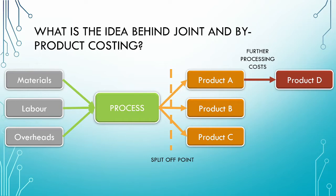These further processing costs can be traced to the individual products to which they relate. One of the key issues we need to deal with in a joint and byproduct costing scenario is the allocation of the joint costs to the joint products. We have four different methods that we will be looking at in this series, and in this video we will be dealing with the physical measures method.